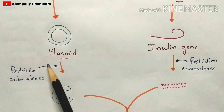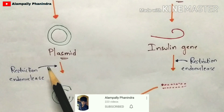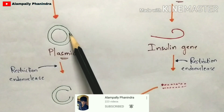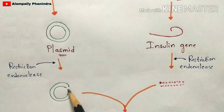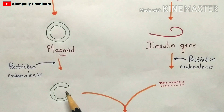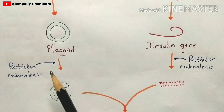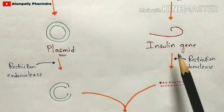Next, you add a restriction endonuclease enzyme to both the plasmid and the insulin gene. What happens when you add this restriction endonuclease is that it cuts the strands of the DNA into fragments. The restriction endonuclease is placed at a particular segment, that segment breaks down into small fragments, those fragments are removed, and the remaining part of the plasmid is retained. The same restriction endonuclease treatment is applied to the insulin gene.